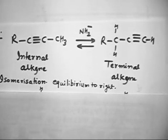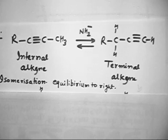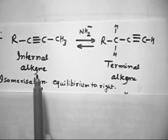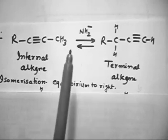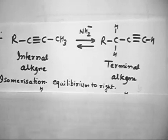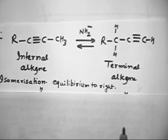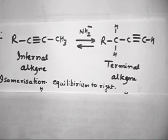The question says: if an internal alkyne is treated with NH2⁻, it converts into a terminal alkyne — you have to propose a mechanism. So you see what is happening: you have an internal alkyne and a terminal alkyne, and there is an equilibrium between them. In the presence of NH2⁻, this equilibrium goes towards the terminal alkyne side.